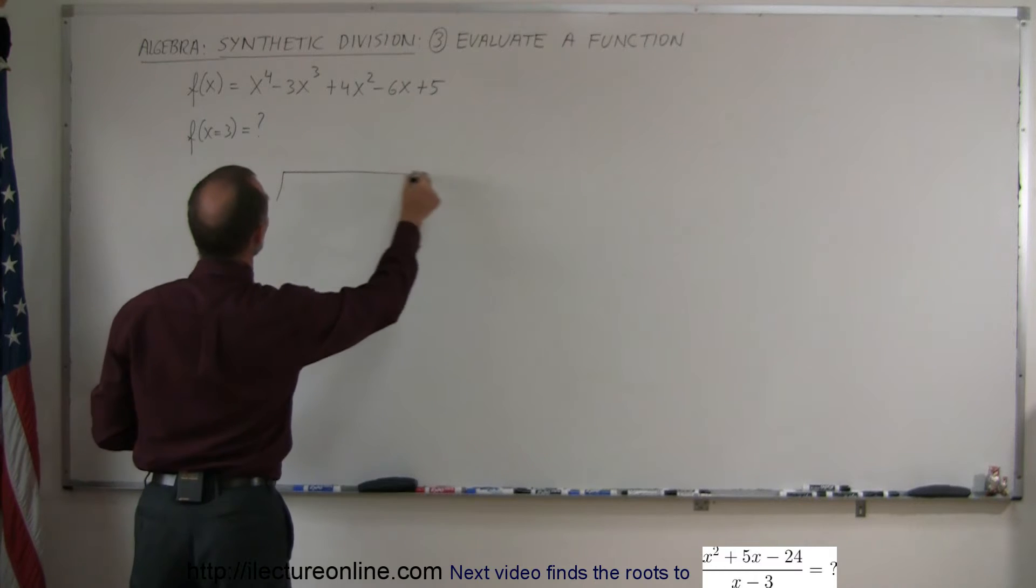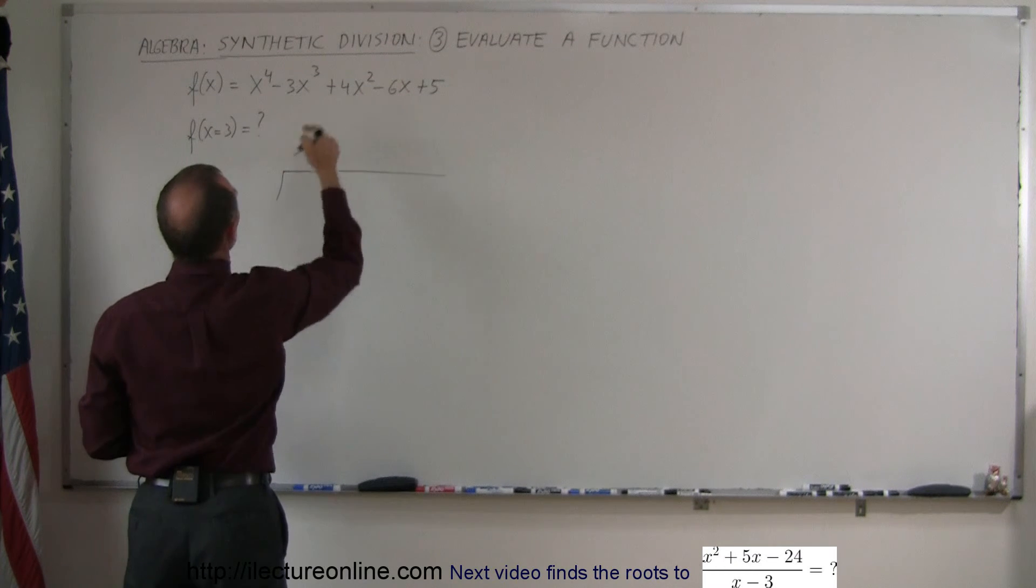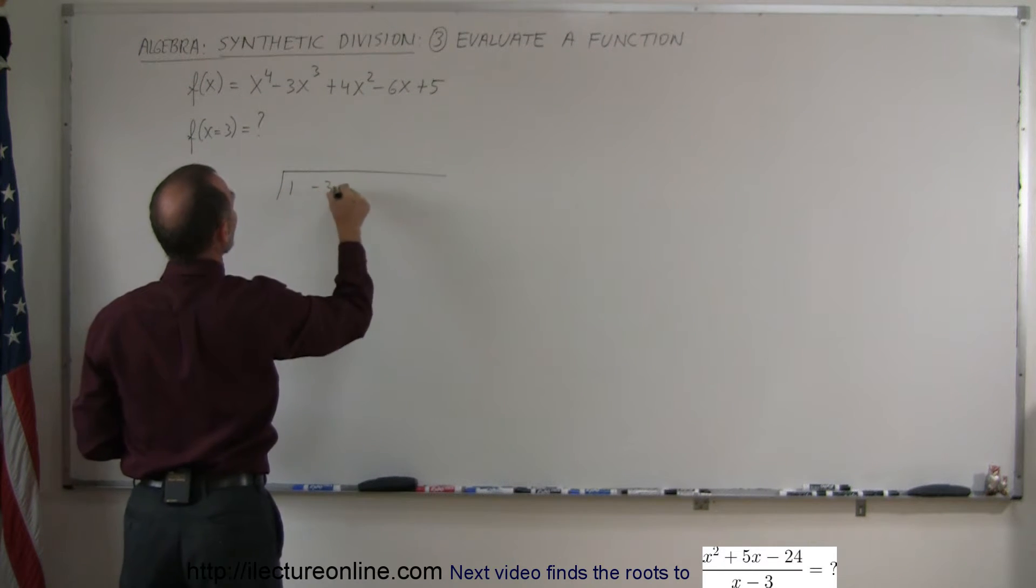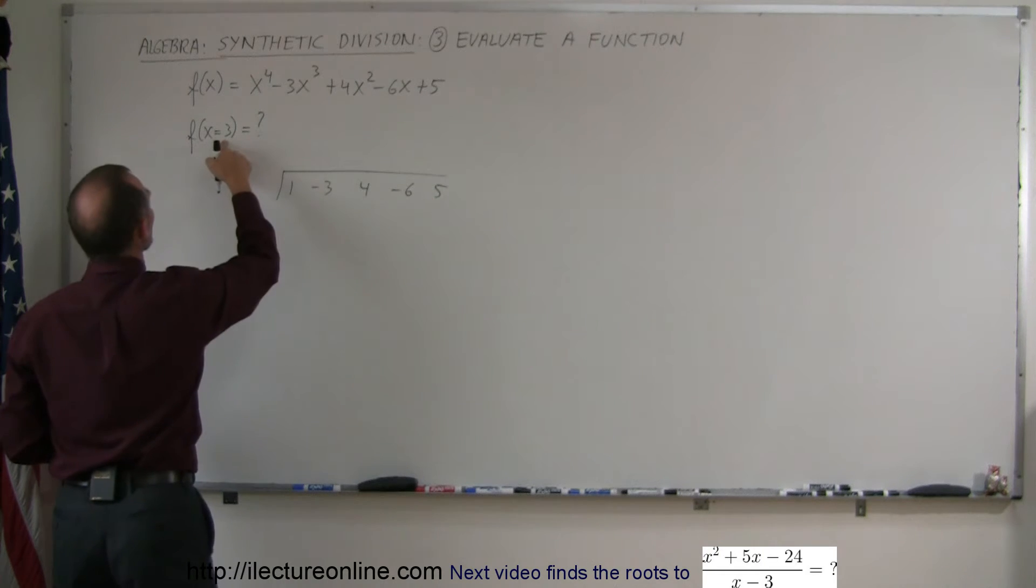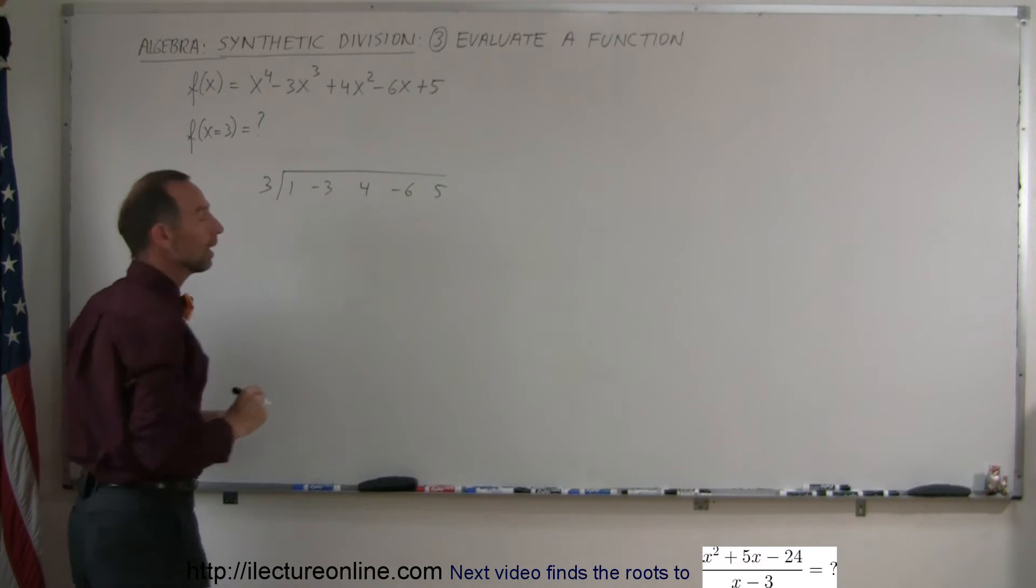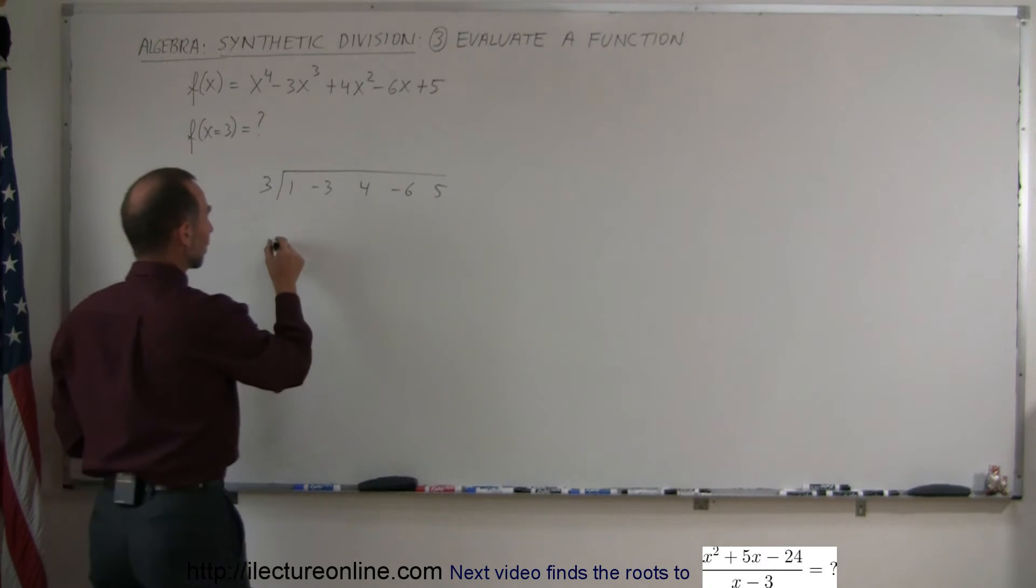Again, you make a division symbol. You take the coefficients: 1, minus 3, 4, minus 6, and 5. Then you take your x equals 3, put the 3 over there, and now you go to your steps for synthetic division.